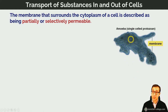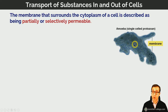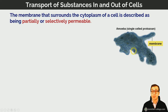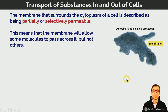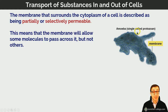The amoeba also produces waste products from its metabolism, including carbon dioxide. If those waste products were allowed to build up inside the amoeba to too high a concentration they would be poisonous to the organism, so it needs to remove them by transport through the cell membrane to the external environment. Overall, the cell membrane must be permeable in both directions to certain substances and must control the rate of movement of those substances in either direction.